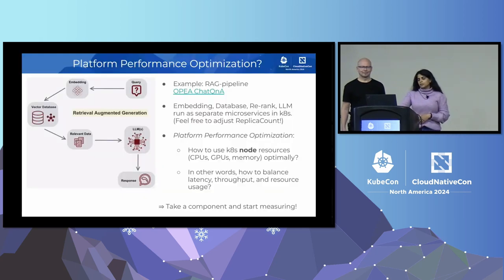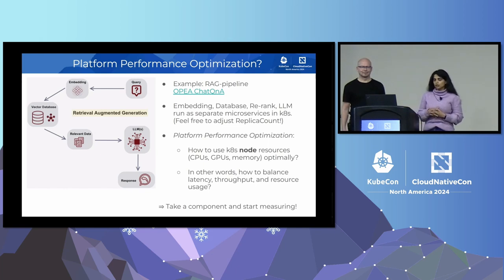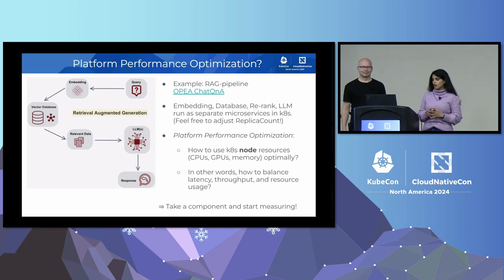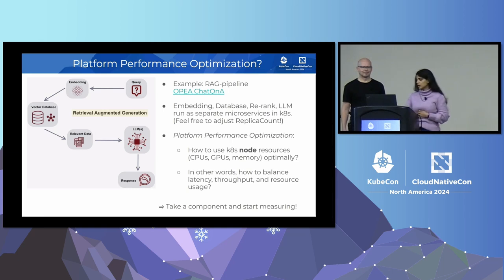For our experiment, we are using a chatbot — it's a RAG pipeline which has all these typical components: the query component, embedding vector database, LLM, relevant data, and so on. These components can be Kubernetes microservices in themselves. We are specifically focusing on the LLM inference component. You could have multiple replicas of this component running, and in the experiment we will see how placing the replicas on the node strategically can help you optimize hardware potential.